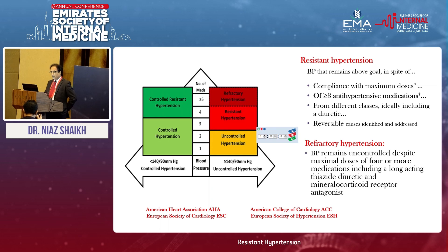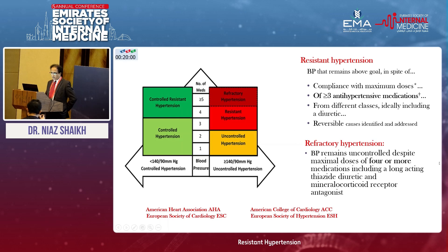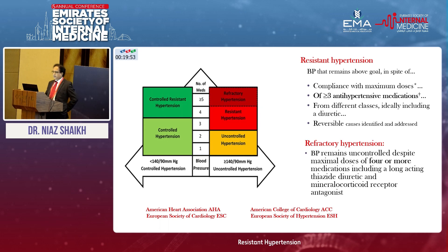We have to rule out the reversible causes, and if the patient's blood pressure is not controlled on more than three drugs, that means patients are requiring four drugs. So if the blood pressure is controlled on four drugs, then we call it controlled resistant hypertension. On the other end, if the blood pressure is not being controlled by four or more medications including diuretic and spironolactone, then we label that as refractory hypertension.